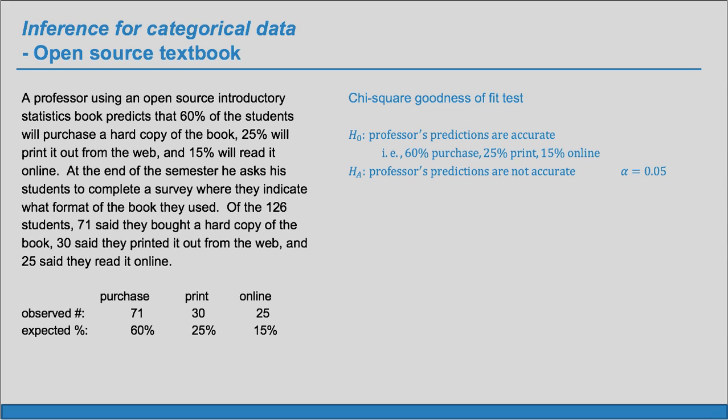So we have the expected percent. We could find the expected number. The expected number, well, we know that there's 126 students. So out of those 126 students, we expect 60% to purchase it. So 0.6 times 126 is going to give us 75.6. Do the same thing for the print. That's going to be 25% of the 126. That's going to be 31.5. And do 15% of 126, and we'll get 18.9.